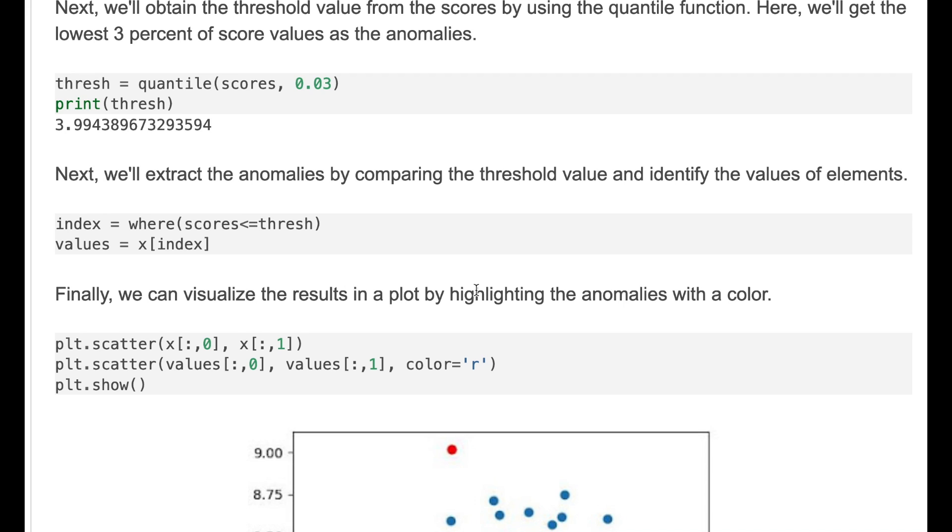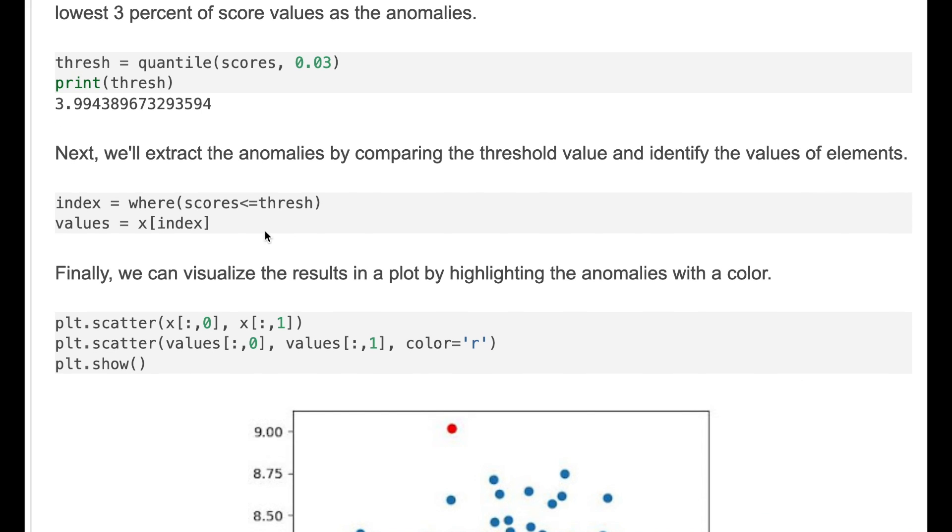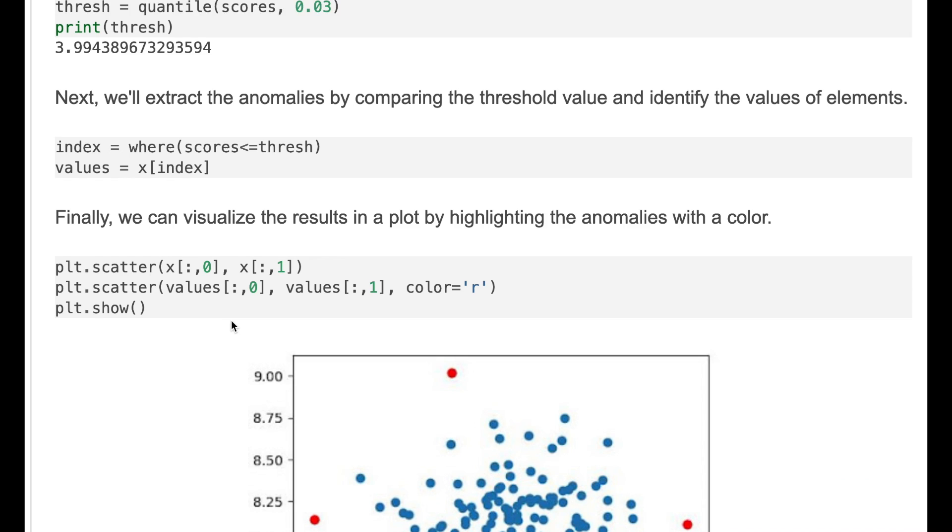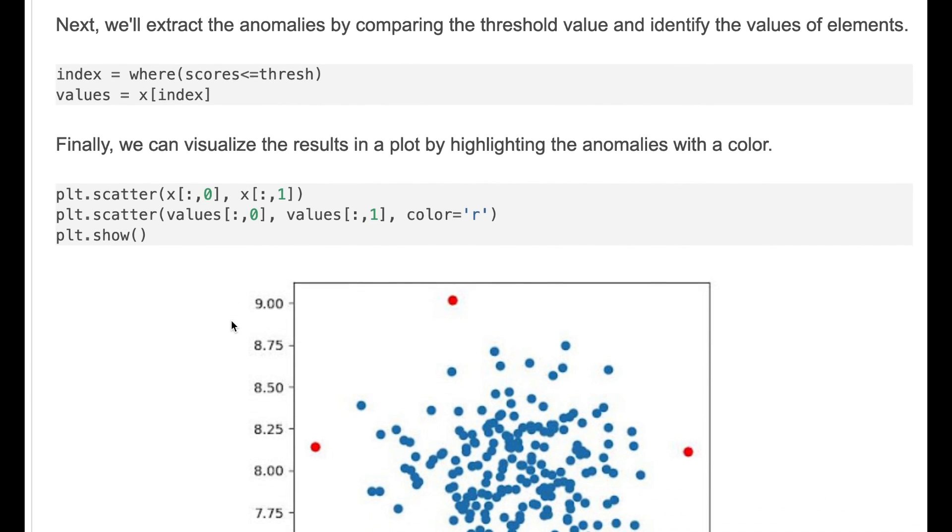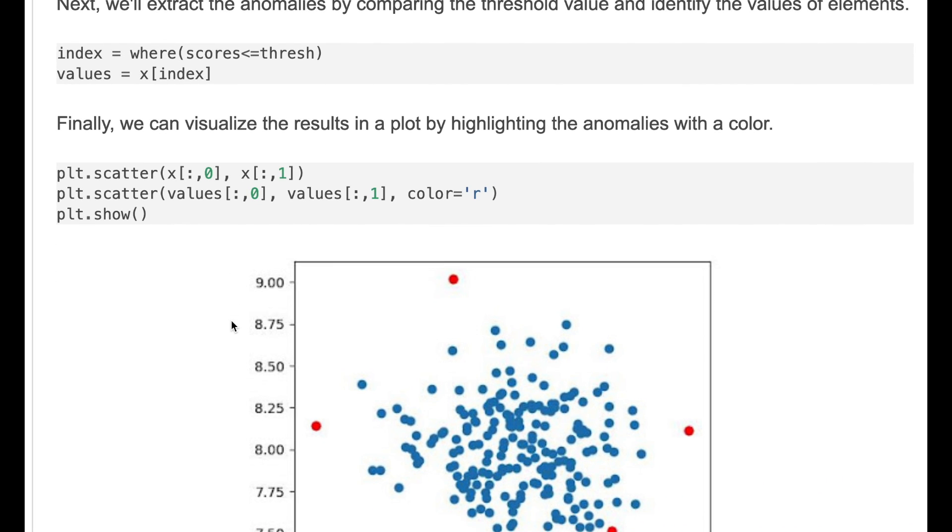We'll extract the anomalies by comparing the threshold value and identify the values of elements. Here we'll find out the indexes of points and their values. Finally we'll visualize the results in a plot by highlighting the anomalies with a color.